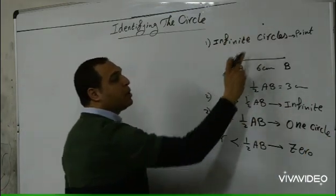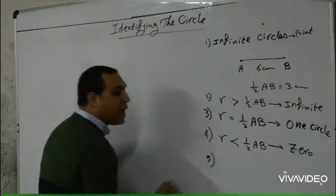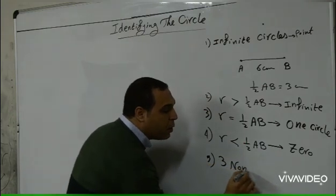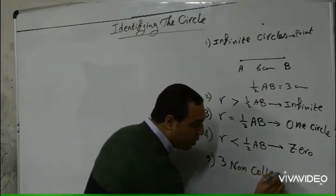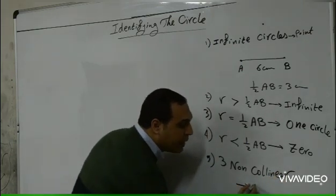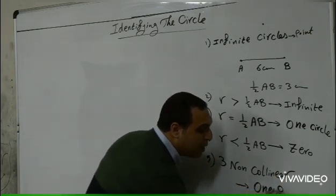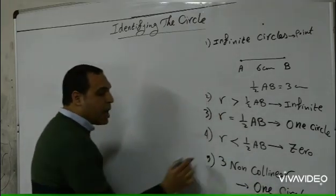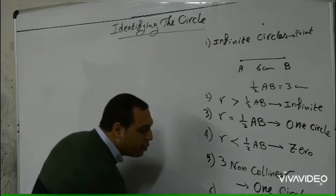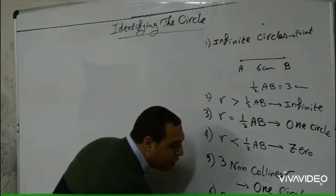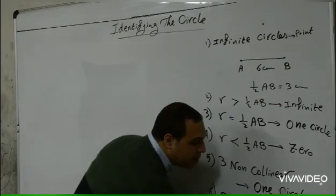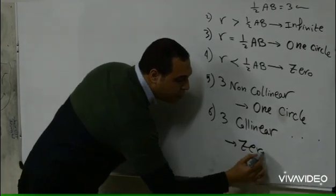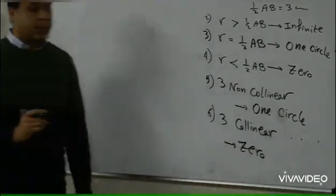That covers one point and two points. What about three points? If we have three non-collinear points — meaning not on the same straight line — we can draw exactly one circle. However, if we have three collinear points, meaning all on the same straight line, no circles can be drawn passing through all three.